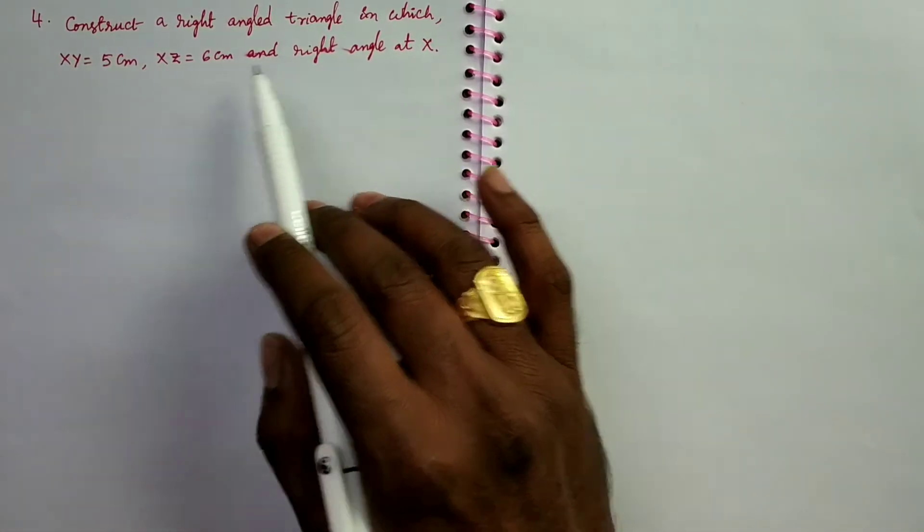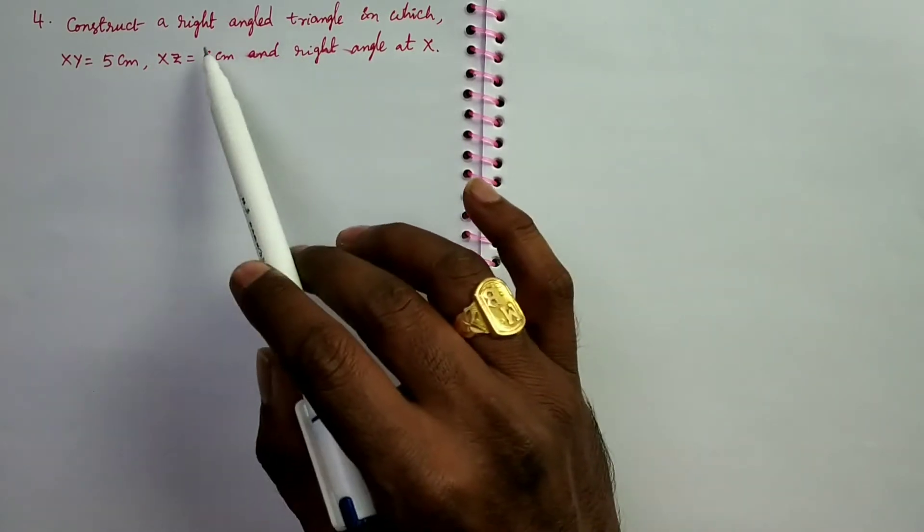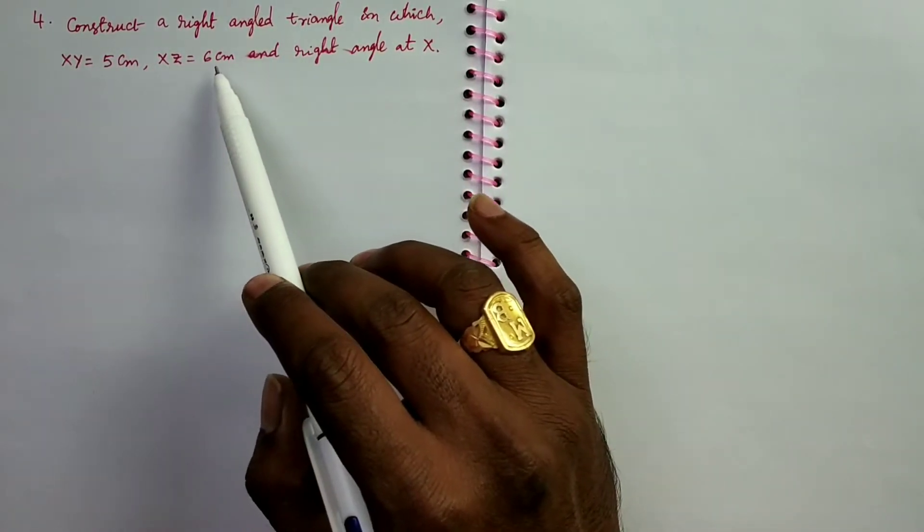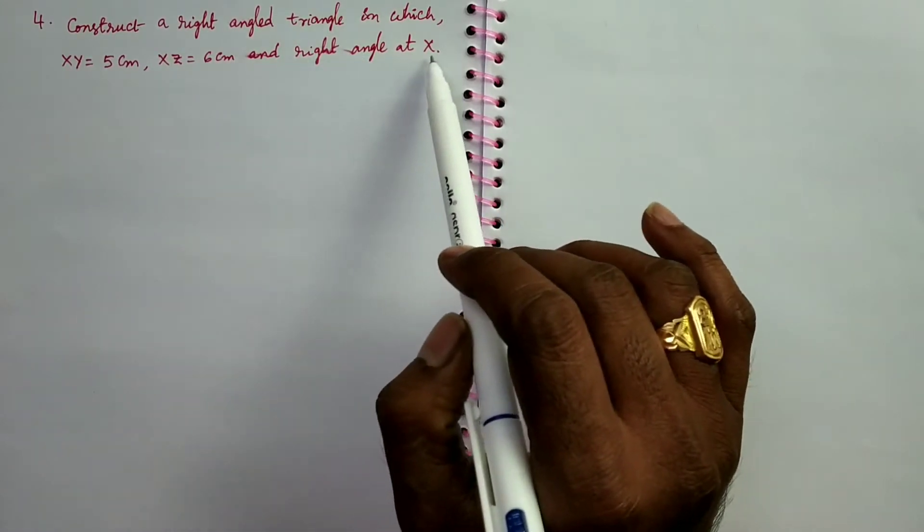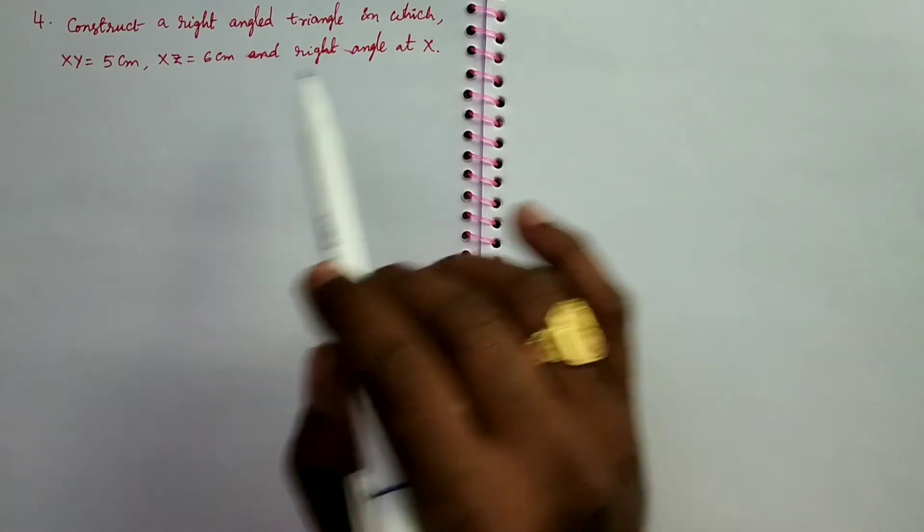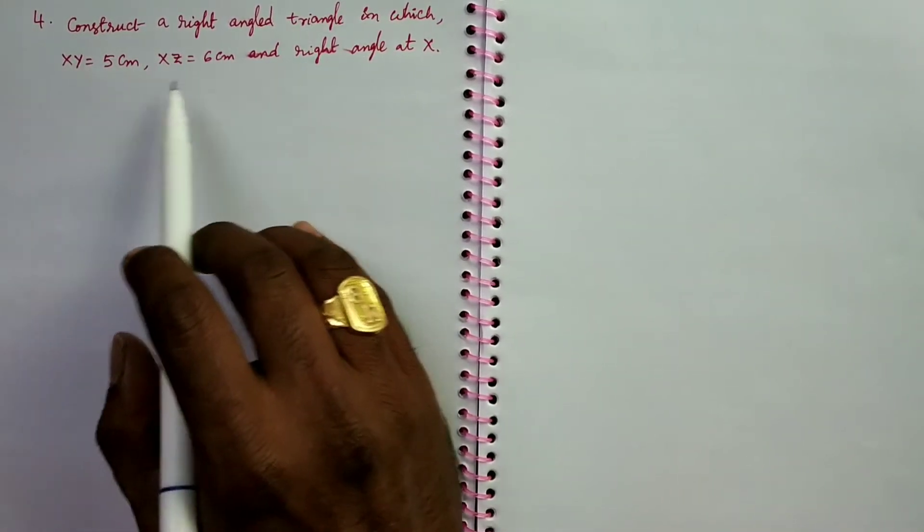Let us go to construct the given triangle. First of all, draw a rough diagram of the given problem. The angle is at X, so X is based on the sides XY and XZ also.